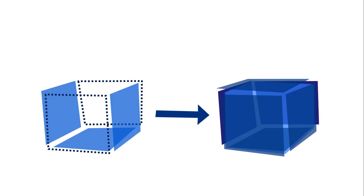A fundamental part of cubical type theory is to make a cube out of fragments of it. On the left, we have three faces of a cube, and the theory guarantees that there is a whole cube matching the pieces. In other words, you can fill a cube from some constraints as long as they are reasonable. Formally, such filling operations are done by something called composition.